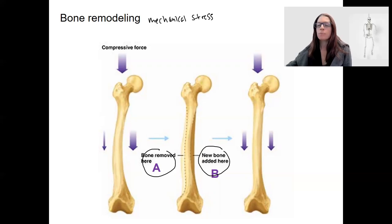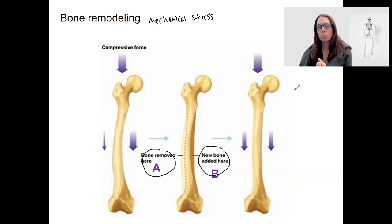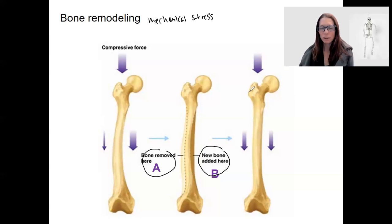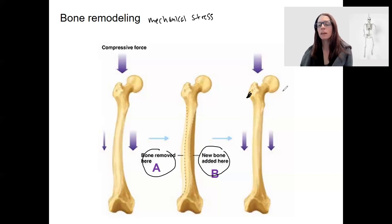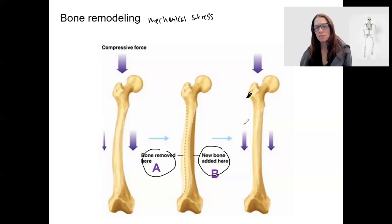Weight lifters actually have thicker bone right where those muscles attach. The muscles they use most for weightlifting produce the thickest bone right at the attachment site, because the force at that spot builds up bone. Aging also tends to decrease osteoblast activity, increase osteoclast activity, and can lead to changes in bone structure and deterioration.